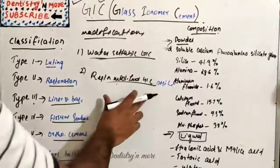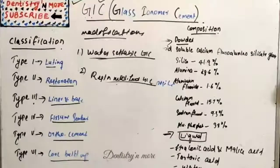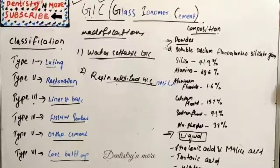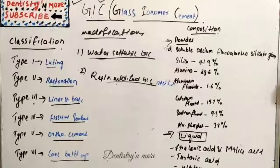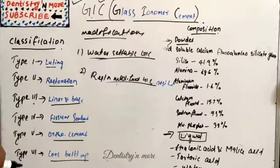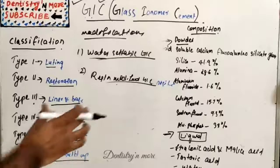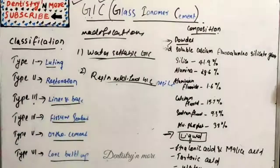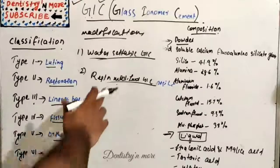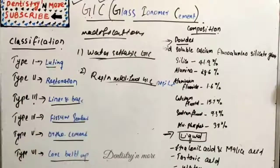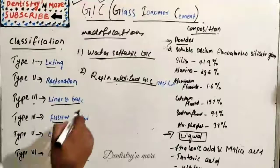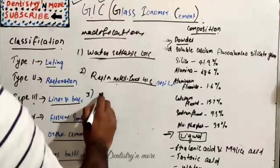The second one is resin-modified GIC. The powder consists of ion-leachable fluoroaluminosilicate glass particles and an initiator for light curing, whereas the liquid consists of water, polyacrylic acid with methacrylate, hydroxyethyl methacrylate monomer. It has got good strength - the strength has improved with the resin modification.